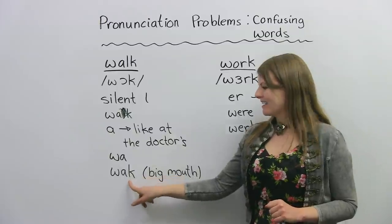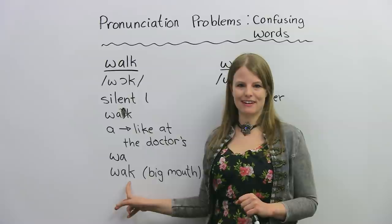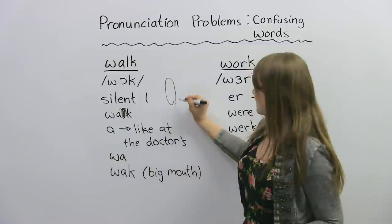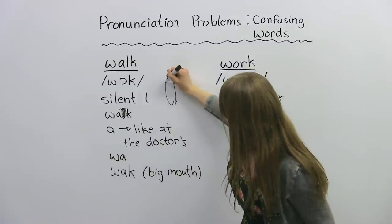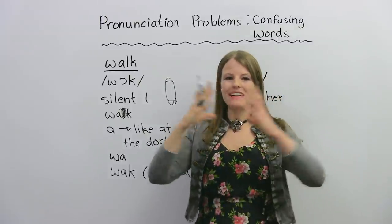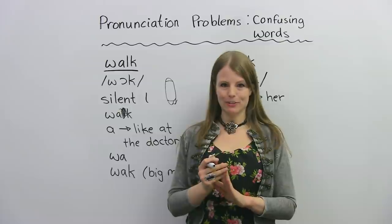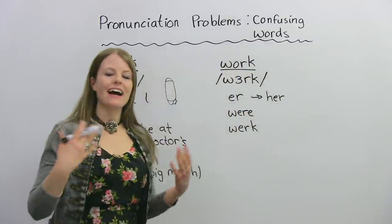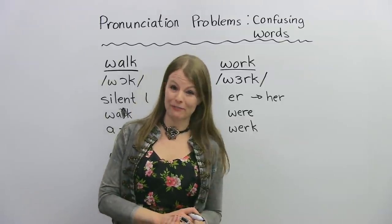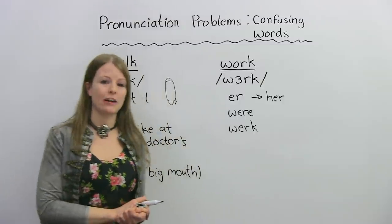Now I want you to add the K: walk. Your mouth for this is very open but not wide — it's narrow. Walk. If you have trouble with these words, it's sometimes a good idea to practice in front of a mirror — see what your mouth is doing, that can help you.